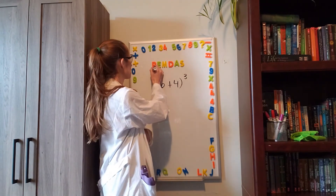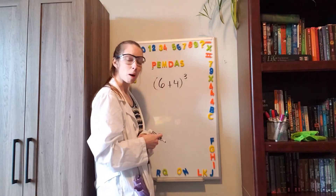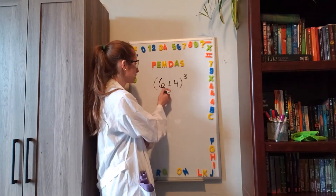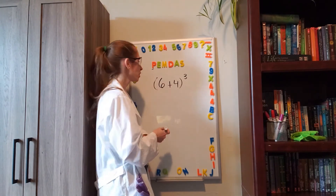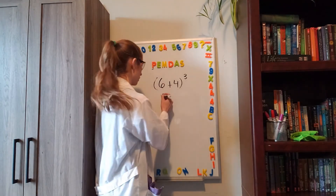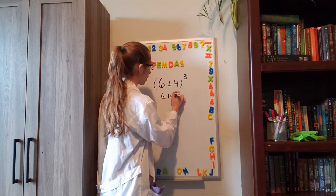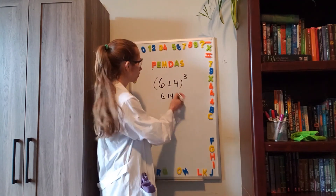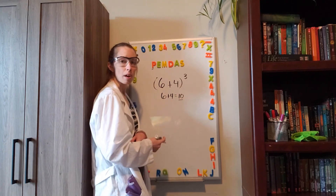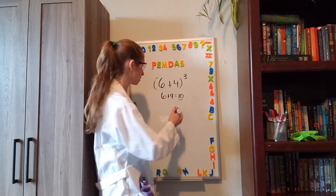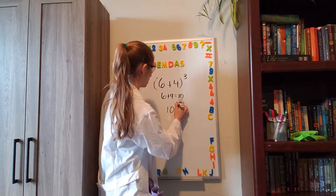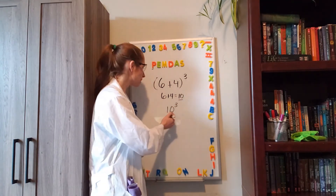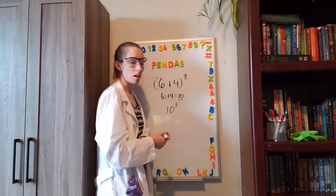So the P at the beginning of PEMDAS lets me know that I have to do the parentheses first. And inside the parentheses, I have 6 plus 4. So that's the first thing I'm going to do: 6 plus 4 equals 10. So I now replace the 6 plus 4 with our equivalent value of 10. 6 plus 4 cubed is the same thing as 10 cubed.